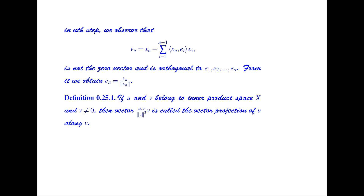In the nth step, vn = xn - Σ_{i=1}^{n-1} ⟨xn, ei⟩·ei, which is non-zero and orthogonal to e1, e2, …, e_{n-1}, and from it we obtain en = vn / ‖vn‖. Additionally, if u and v belong to an inner product space and v is non-zero, then the vector (⟨u, v⟩ / ‖v‖²)·v is called the vector projection of u along v.